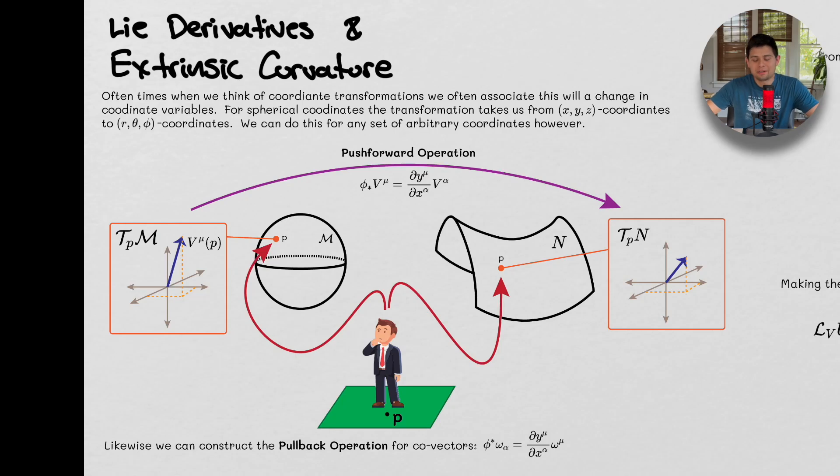Hey guys, what's going on? Today we are going to talk a little bit about the Lie derivatives and extrinsic curvature within the context of the ADM formalism, which is within the context of quantum gravity. So with that being said, I hope you guys like this kind of content. Make sure to hit that like and subscribe button, and also go onto my Patreon page if you want to support the channel, get the notes, and you can become a member on YouTube as well. So let's go ahead and get started.